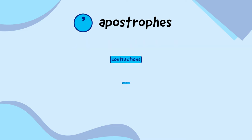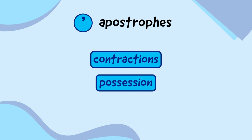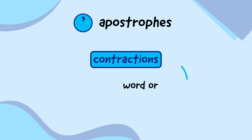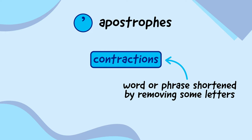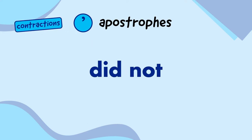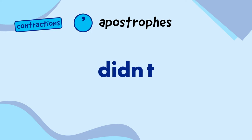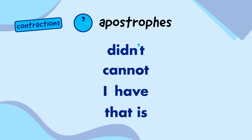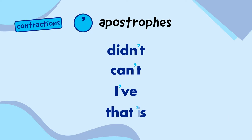Apostrophes are used in two different ways. The first is in a contraction, which is a word or phrase that has been shortened by removing some of its letters. An apostrophe is used to show where the letters are missing. For example, we can shorten 'did not' down to 'didn't' by removing the O and replacing it with an apostrophe. Other examples are turning 'cannot' into 'can't', 'I have' into 'I've', and 'that is' into 'that's'.